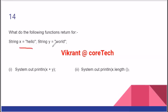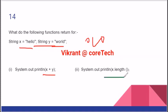This is 'hello' and this is 'world'. This will print 'helloworld' with no gap between O and W — O and W will come all together. The length of X: index starts from 0, but length starts from 1, so the answer will be 5.